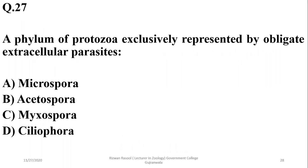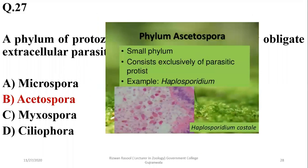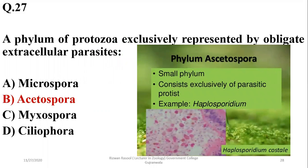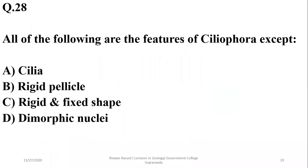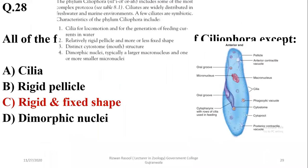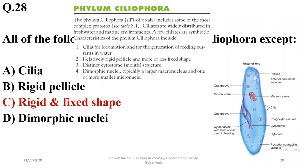Question twenty-seven: a phylum of protozoa exclusively represented by obligate extracellular parasites is Acetospora — a small phylum composed entirely of obligate extracellular parasites. Question twenty-eight: which of the following is not a feature of Ciliophora? Ciliophora have cilia, a rigid pellicle, and dimorphic nuclei, but do not have a fixed shape despite the rigid pellicle. The correct option is C.